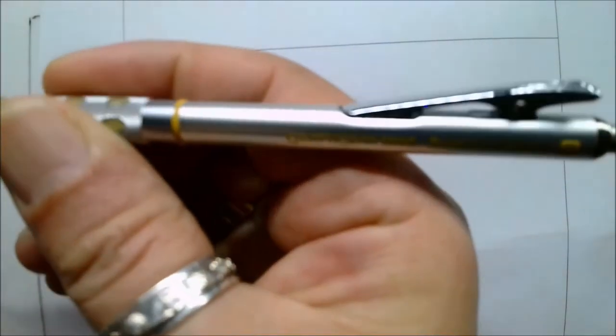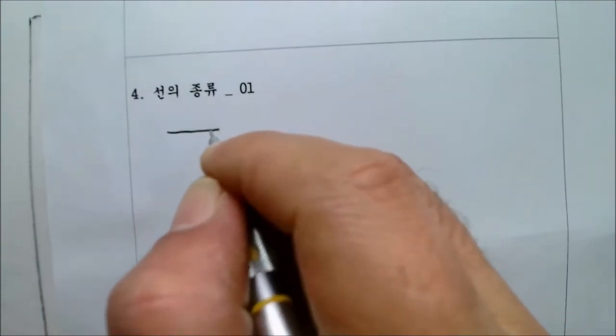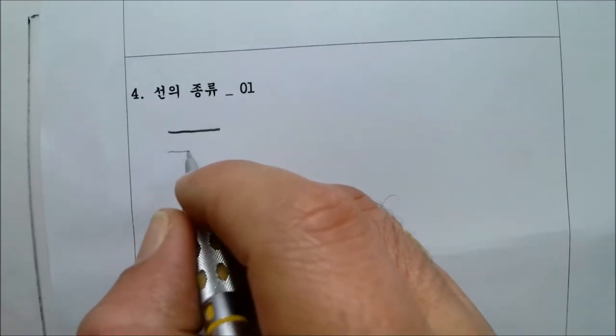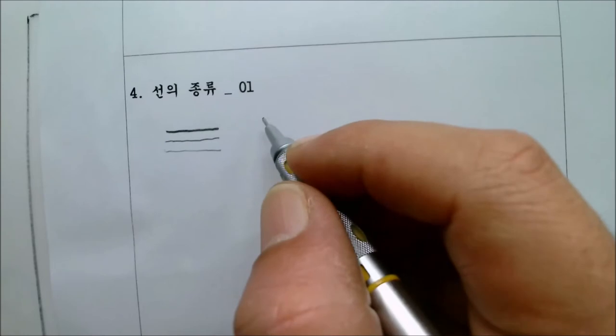자 선의 종류입니다. 여러분들 이거 선생님이 좀 시간을 많이 가질거에요. 자 선은 왜 달려야 할까요? 선생님 봅시다. 자 이게 무슨 샤프죠? 구미입니다. 때로는 진하게 그렸습니다. 때로는 연하게 그렸어요.